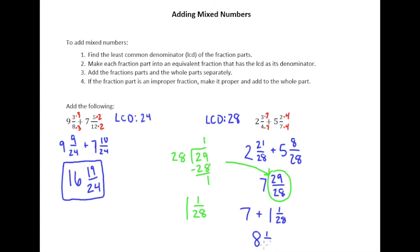And so all we have to do when we end up with an improper fraction in our answer, turn it to a mixed number, and then give its whole part, in this case the 1, to the whole part in your answer. So we just add this 1 to the 7 to make 8, and then 1 twenty-eighth is the new fraction part.